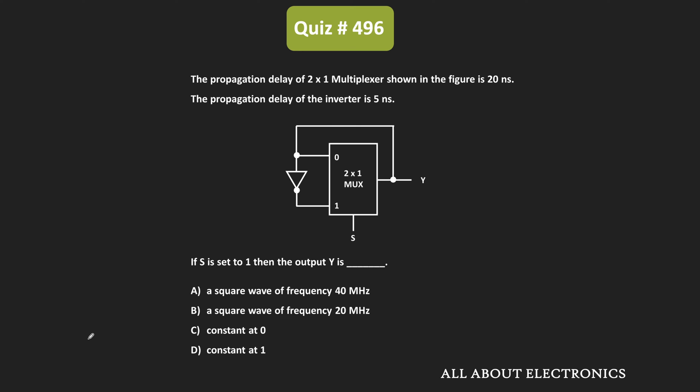Hey friends, welcome to the YouTube channel all about electronics. In this question, we have been given a multiplexer-based circuit where the propagation delay of the 2-to-1 multiplexer is equal to 20 nanoseconds, while the propagation delay of the inverter is equal to 5 nanoseconds. The selection input S is set to 1, and we have been asked to find how the output Y will look like, given four options.